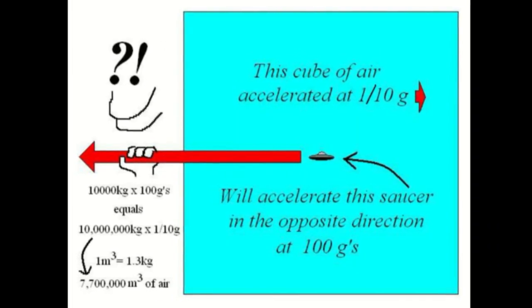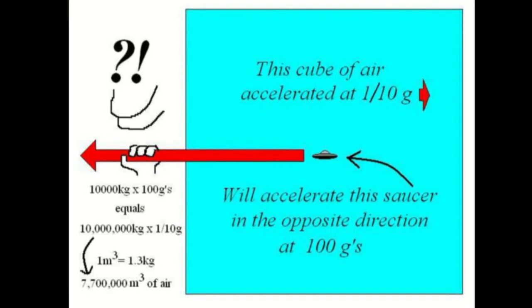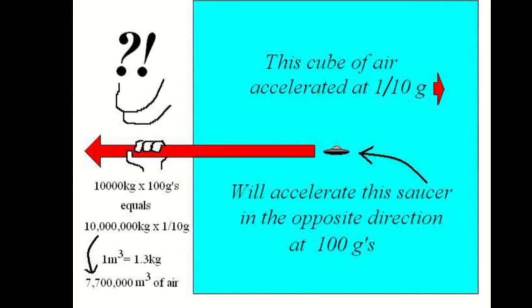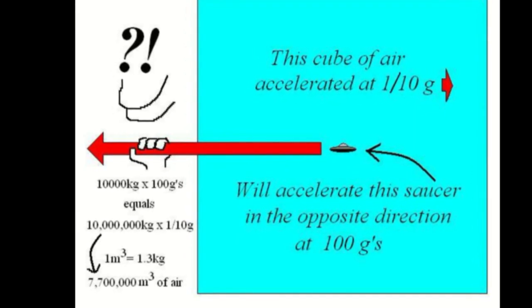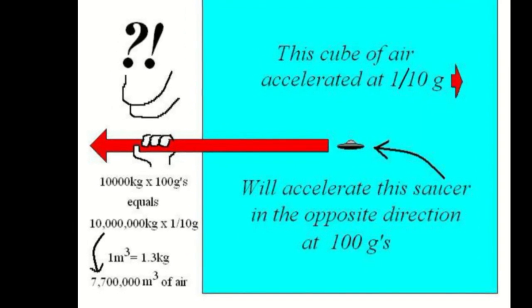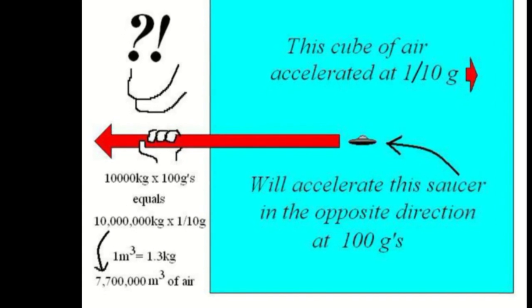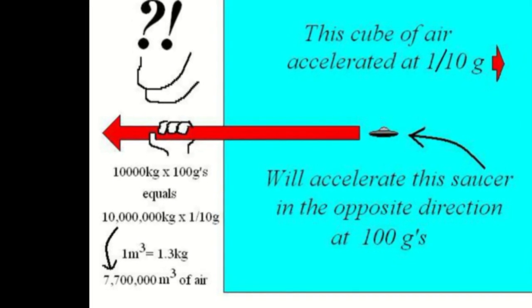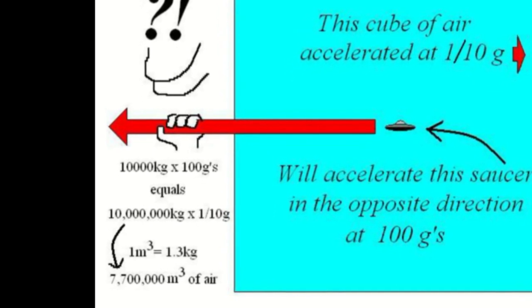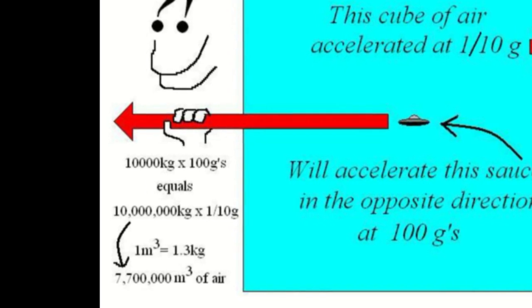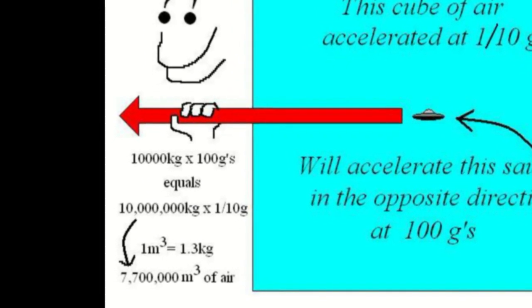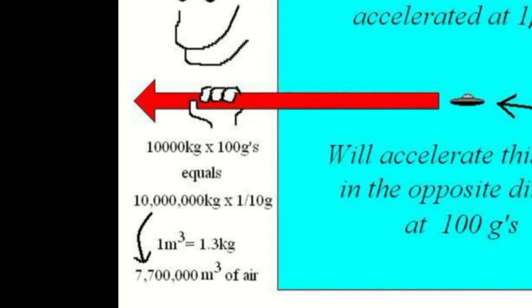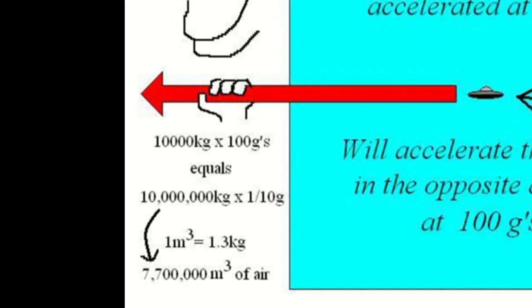We have a 10,000 kg craft times 100 Gs in one direction, so we need to push the air in the opposite direction slowly, so it won't be detected as jet exhaust. Let's push it at one tenth of a G. That is, after one second, our chunk of air will have gone just 0.49 meters, or less than two feet. That much motion might not be detected by observers. Then, 10,000 kg times 100 Gs must equal x number of kg times one tenth of a G. So, x must be 10 million kg of air. One cubic meter of air equals 1.3 kg. So, we need 7.7 million cubic meters of air.